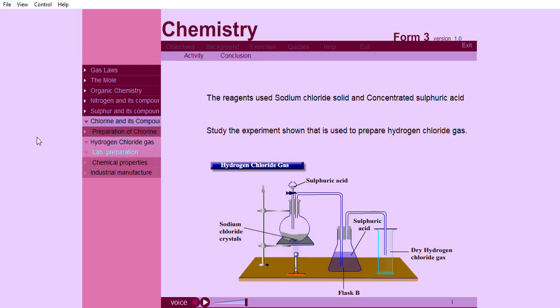The reagents used are sodium chloride solid and concentrated sulfuric acid. Study the experiment shown that is used to prepare hydrogen chloride gas.